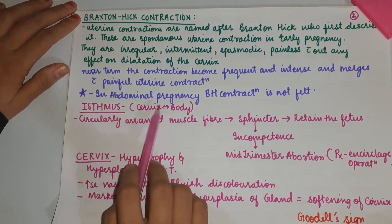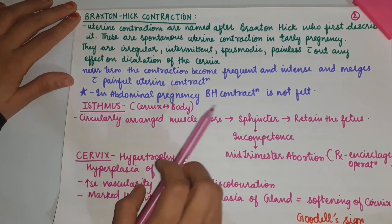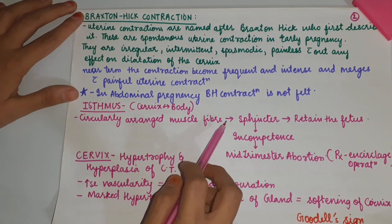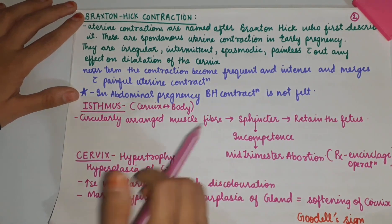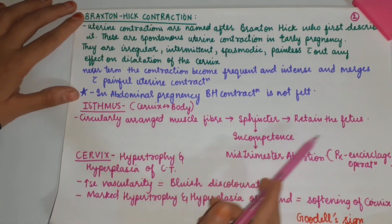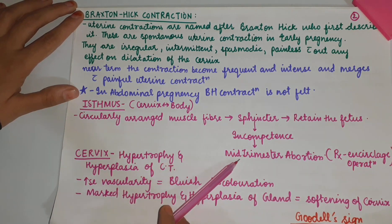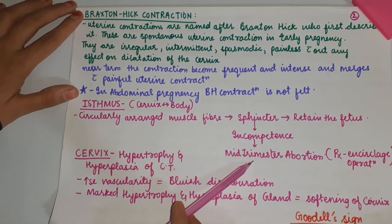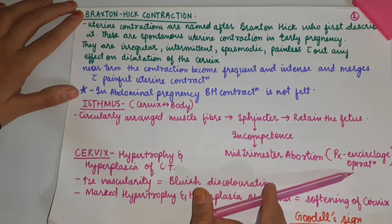The isthmus is the connection between the cervix and the body. It is a circularly arranged muscle fiber with sphincteric action. It retains the fetus. Incompetence of this sphincter leads to mid-trimester abortion, and the treatment for this is the encerclage operation.